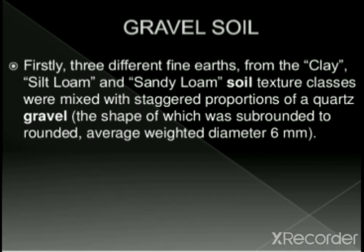Gravel soil: three different fine earths from clay, silt loam and sandy loam soil texture classes were mixed with staggered proportions of coarse gravel, the shape of which was sub-rounded to rounded, with an average diameter of 6 mm.